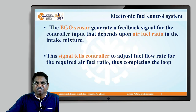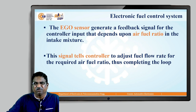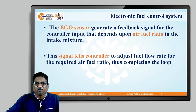The EGO sensor generates a feedback signal for the controller input that depends upon the air-fuel ratio in the intake mixture. This signal tells the controller to adjust the fuel flow rate for the required air-fuel ratio, thus completing the closed loop.